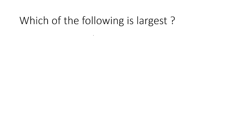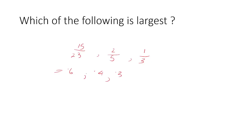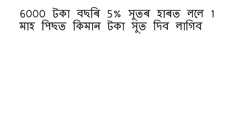Which of the following is the largest? The options are 15 by 23, 2 by 5, and 1 by 3. Converting to decimals: 15 by 23 is approximately 0.6, 2 by 5 is 0.4, and 1 by 3 is 0.3. So the largest is 0.6, which means 15 by 23.